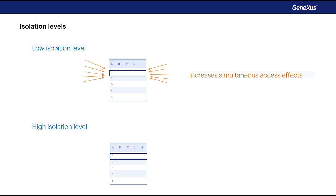Conversely, a higher isolation level reduces the types of concurrency effects that users may encounter but requires more system resources and increases the chances that one database transaction will block another. The DBMS usually acquires locks on data, which can result in the loss of concurrency, or implements multi-version concurrency control. This requires adding logic for the application to work correctly. Isolation levels are as follows.